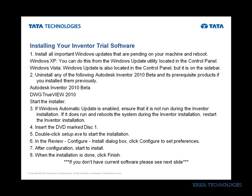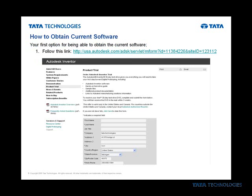If you don't currently own the software, you have a few choices. One is going to the PowerPoint that was attached to your zip file and selecting the link that is on this slide. It will take you out to Autodesk.com, where you can request a product trial of the Autodesk Inventor 2010 software itself.